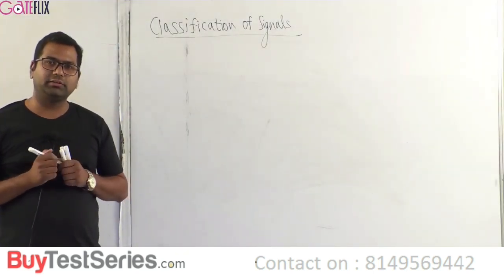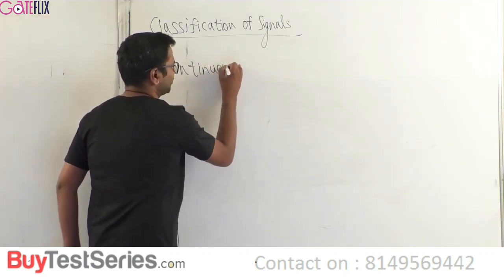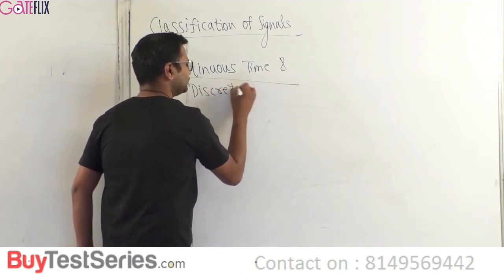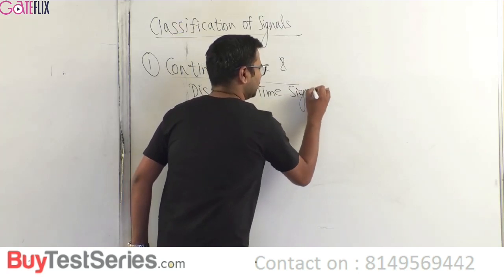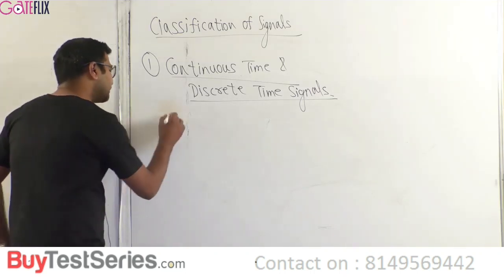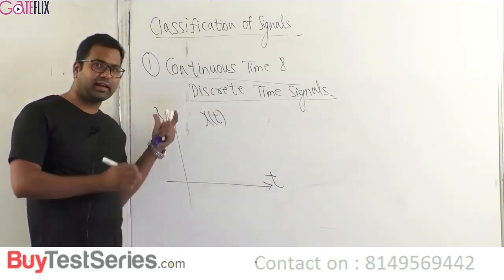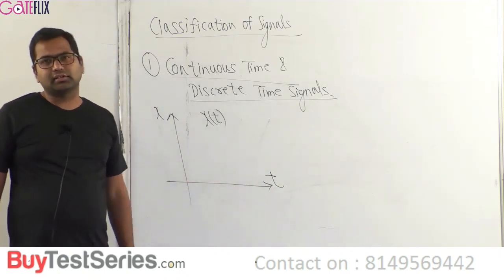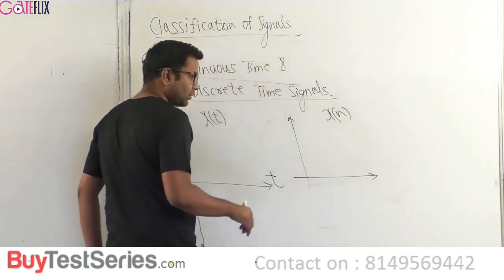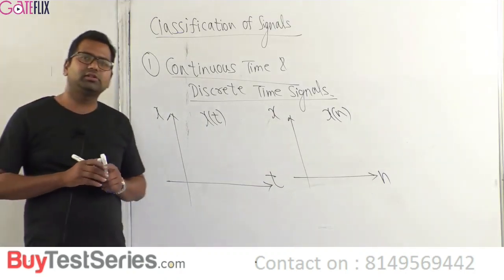The next topic is classification of signals. The first category is continuous time and discrete time signals. A continuous time signal is denoted by x(t), where x varies with continuous time t. A discrete time signal is denoted by x(n), where n is the discrete time. This notation is very important.